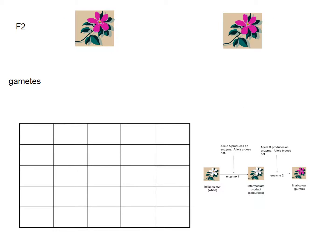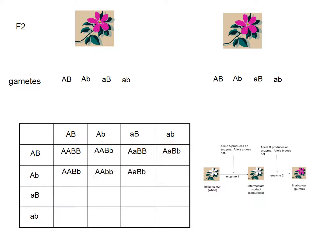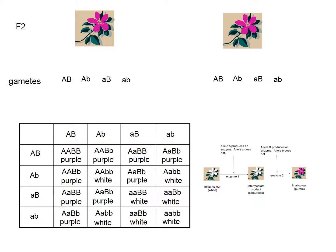When they cross this F1 generation to get the F2, work out the gametes first. For both of them you're going to have: AB, Ab, aB, and ab. Pop those into your Punnett square and start working out the genotypes. Pause the video, work out the genotypes and check your answers. Now underneath each one, write down the phenotype. Remember, if there's at least one dominant A and one dominant B, it should be purple; if not, white. Pause and check. And if you count them up, you've got a 9 to 7 ratio.